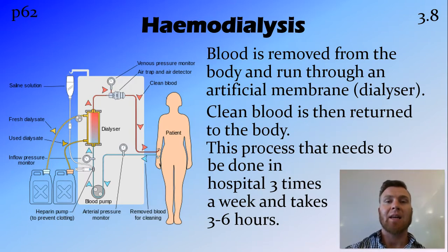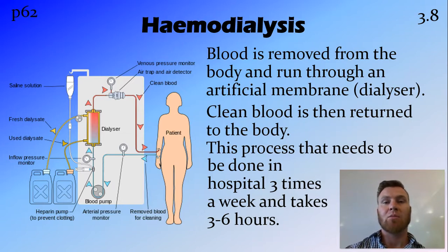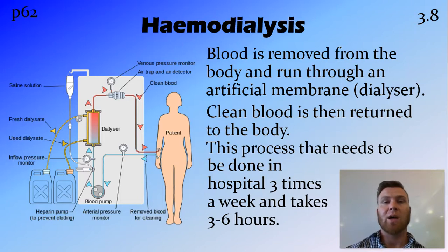Hemodialysis — where 'heme' means relating to blood — is where blood is removed from the patient and put through a dialysis machine. In particular there's an artificial membrane in that machine called a dialyser. In the dialyser, on one side you have the dialysate and on the other side you have the blood, with a semi-permeable membrane separating them. This takes out the unwanted salts and waste products, and that clean filtered blood is then put back into the body. You need one of these dialysis machines to do this, so it needs to be done in a hospital. Generally it's effective enough that you can get away with doing it about three times a week, and each of these sessions takes three to six hours — so that's three to six hours three times a week in the hospital, which means you can't really move far from the area that the hospital is in.